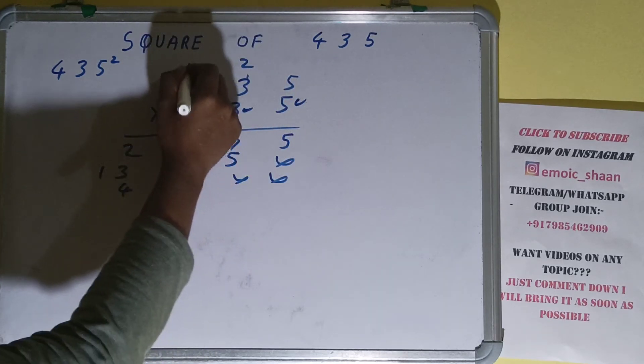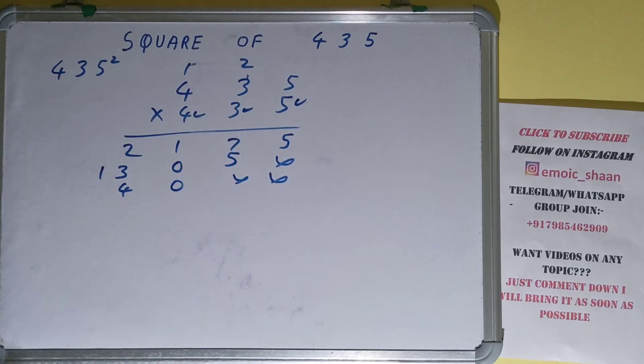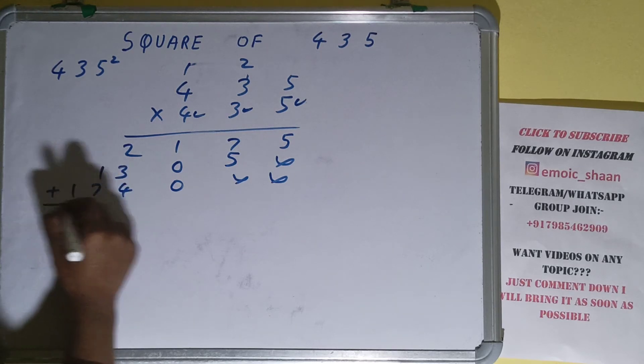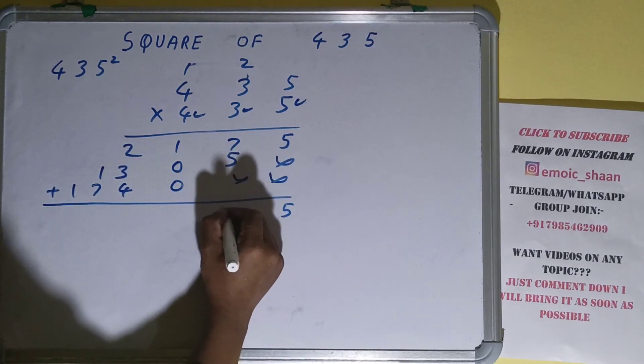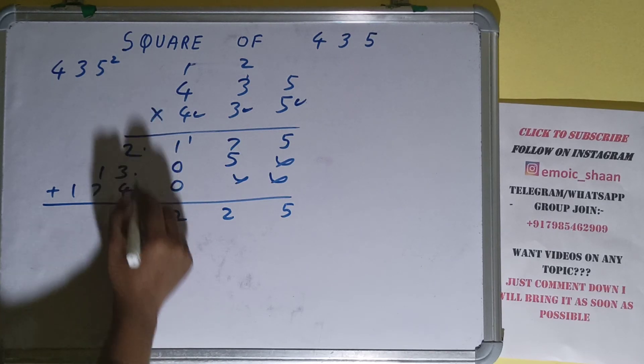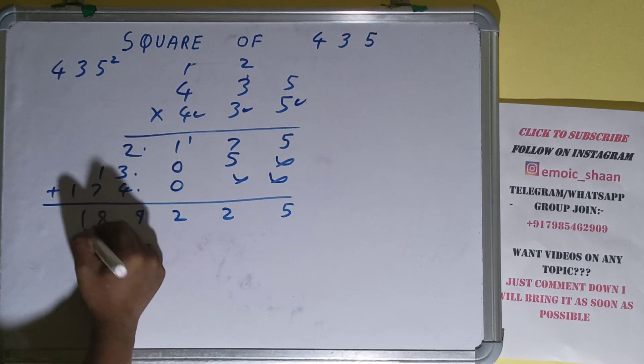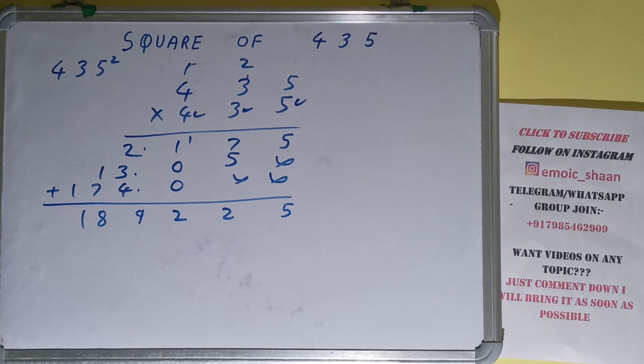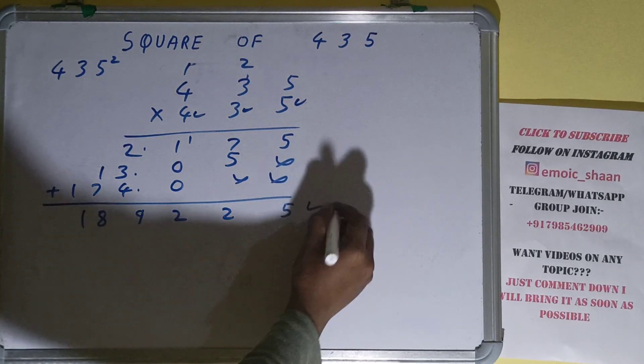Add everything: 5, 2, 2, 4 plus 3 is 7, 8, 9, 8, 1. So your answer will be 189,225. That will be square for the number 435.